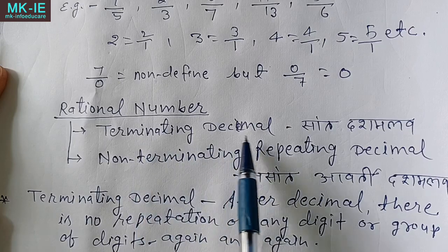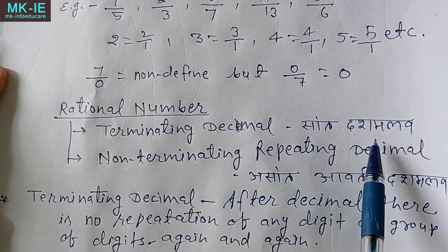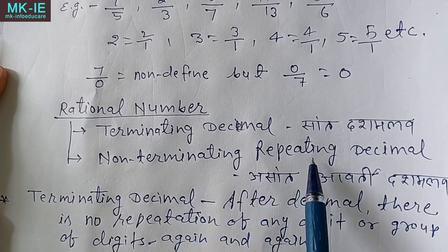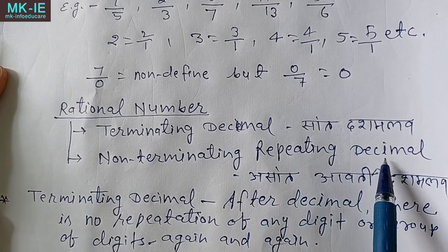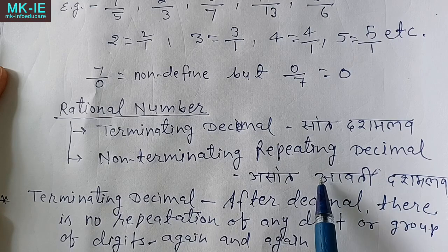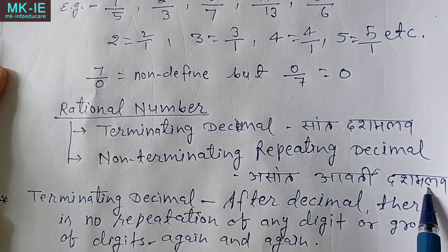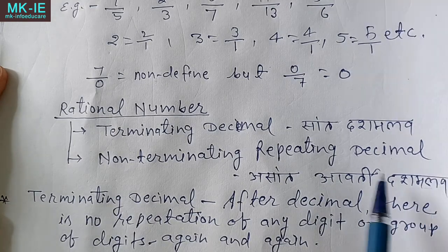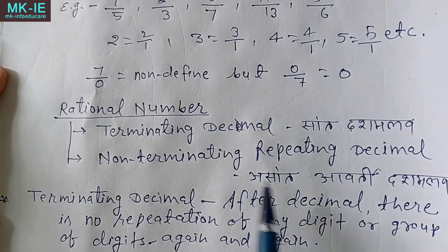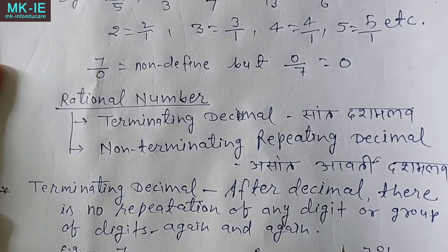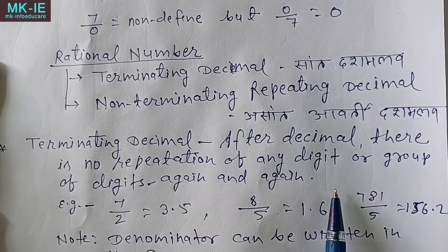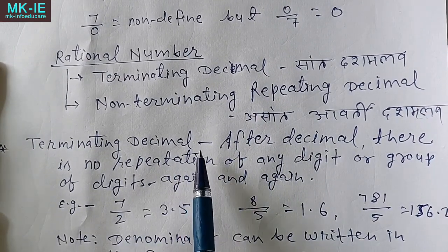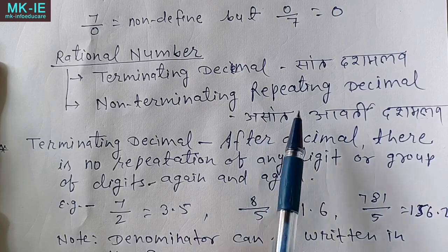Terminating decimal means a finite decimal — दशमलव जो समाप्त हो जाए। Non-terminating repeating decimal means a decimal that goes on with repetition — दशमलव जो चलता रहे और दोहराता रहे।